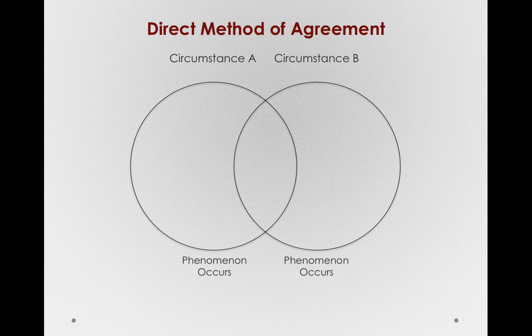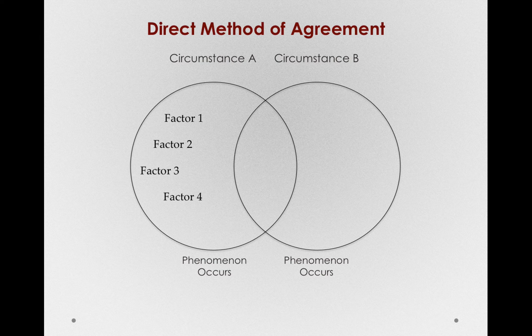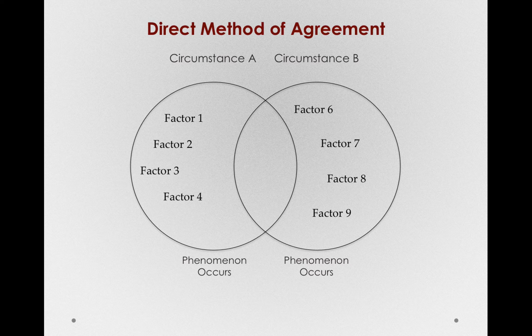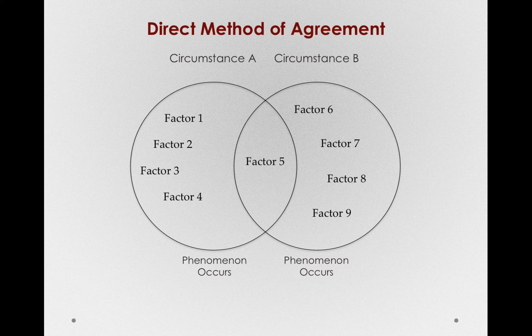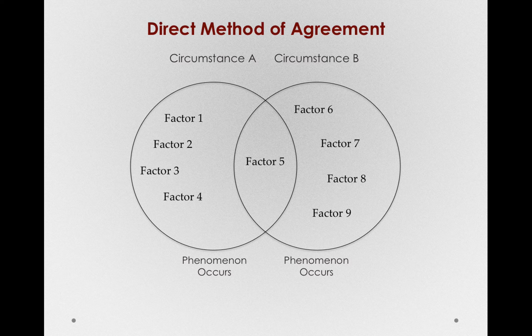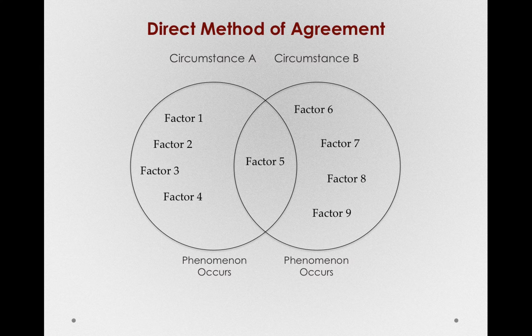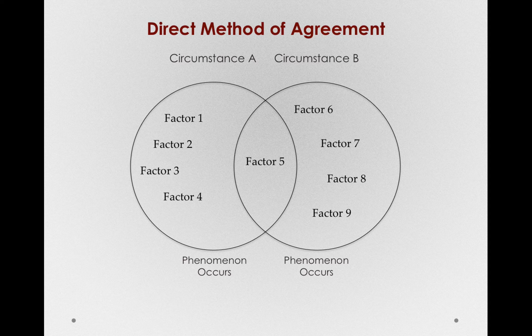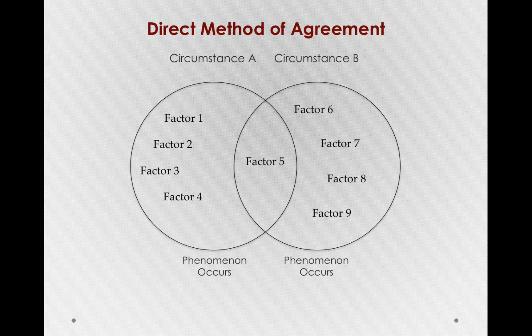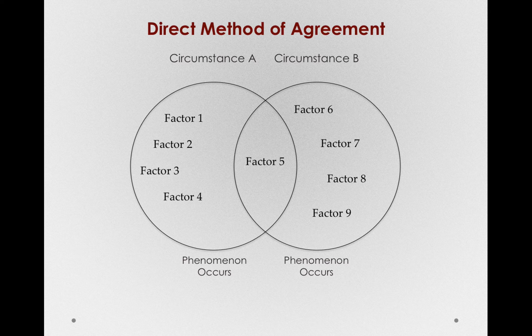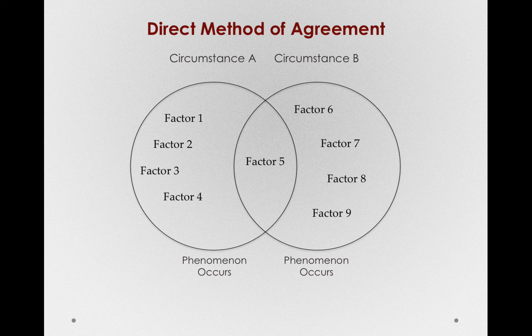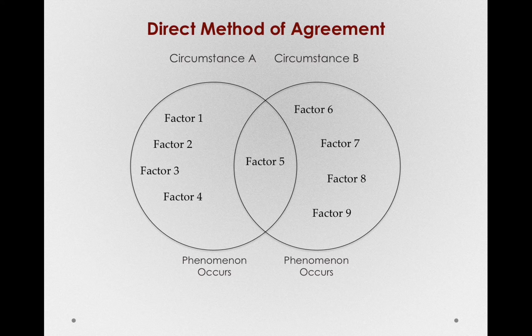We've added a number of different things to each of these vials. In circumstance A, we have factors 1, 2, 3, and 4. These can be different liquids, if you like. In circumstance B, we have factors 6, 7, 8, and 9. And, in both A and B, we have factor 5. By the direct method of agreement, if factor 5 is the only factor in common between these two circumstances in which the phenomenon occurs, factor 5 must be the cause or the effect of the phenomenon. This last bit is a little bit hard to see, but just by observing that factor 5 is in common with circumstance A and B, it's not enough for us to say that factor 5 causes the phenomenon only to show that there is some causal connection between factor 5 and the phenomenon.